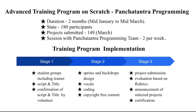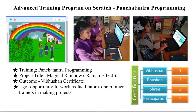The entire project should contain copyright-free content. In stage 3, we submit the project and evaluation is done based on rubrics. After evaluation, selected projects are announced and certification is given. We did a project on the Raman Effect and the title of the story is Magical Rainbow. In this program, we received a Vibhushan Certificate, and I also got an opportunity as a facilitator to help other trainers with their projects.